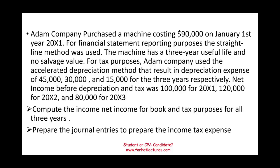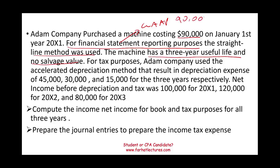Adam Company purchased a machine costing $90,000 on January 1, 20X1. For financial statement reporting purposes — GAAP — the straight-line method was used. The machine has a three-year useful life and no salvage value, so each year we take $30,000 of depreciation. Adam Company used the accelerated depreciation method for tax, resulting in depreciation expense of $45,000, $30,000, and $15,000 for years X1, X2, and X3 respectively.